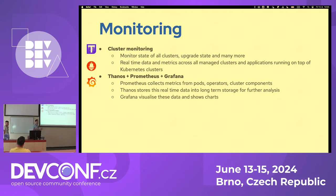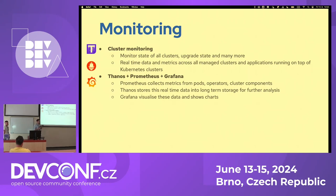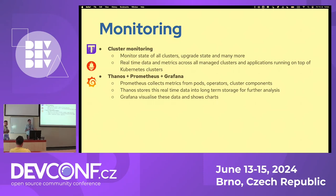We have Prometheus on every cluster — installed by default — pointed to the central hub. The central hub also hosts a Grafana instance where we can easily check metrics in Grafana dashboards. The only data source we use is from Thanos, so we don't worry about data sources from each individual cluster. We can retrieve metrics for the last 10 or 30 days — basically as long as your Thanos instance is configured to retain data.